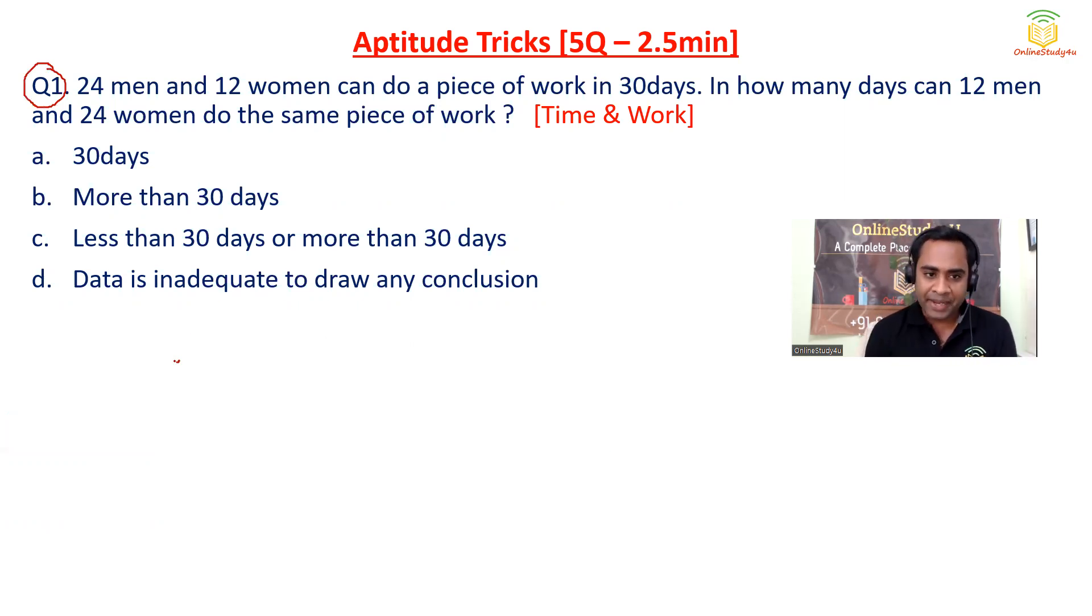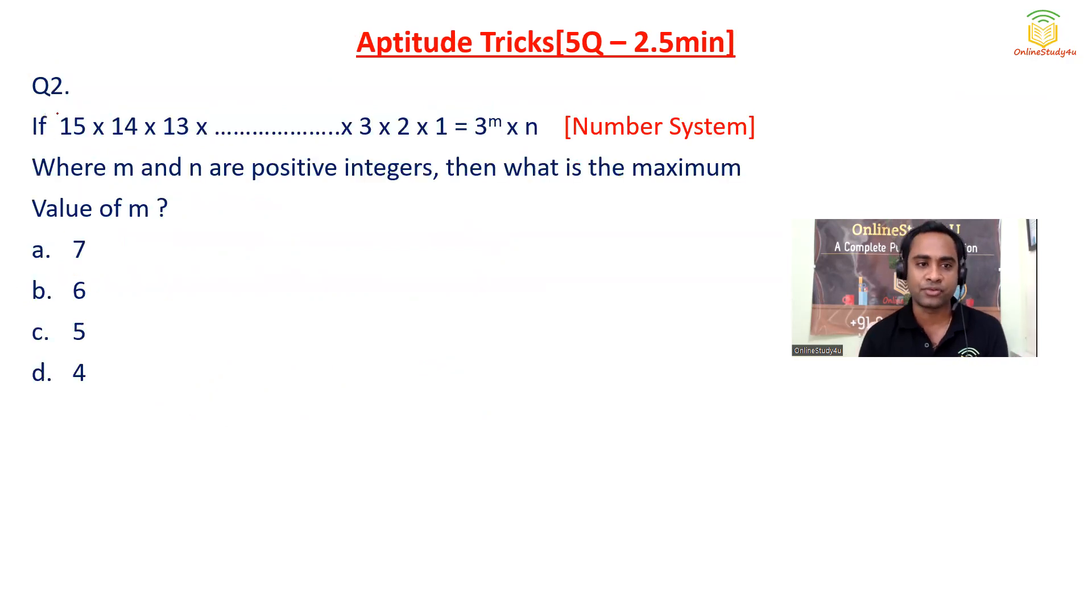24 men and 12 women can do a piece of work in 30 days. In how many days can 12 men and 24 women do the same piece of work? That means we need to know the efficiency of men and women. But we have only one equation and we have two unknowns. We cannot solve for finding out two unknowns. We should have two equations at least. So my answer will be data is inadequate to draw any conclusion.